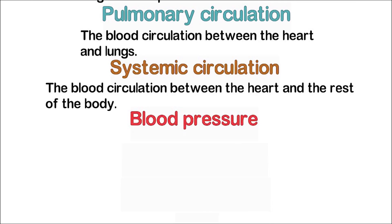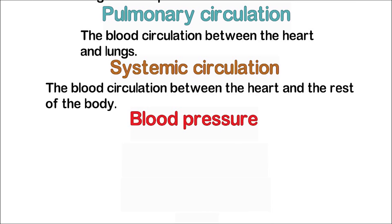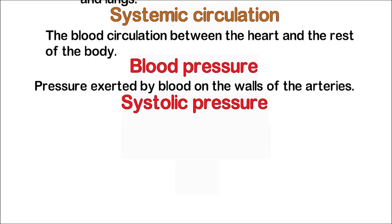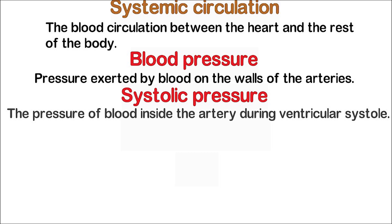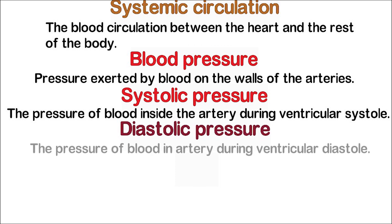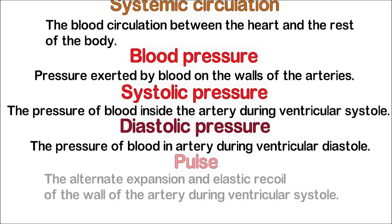Blood pressure is the pressure exerted by blood on the walls of the arteries, measured with a sphygmomanometer. Systolic pressure is the pressure of blood inside the artery during ventricular systole. Diastolic pressure is the pressure of blood in the artery during ventricular diastole. Pulse is the alternate expansion and elastic recoil of the wall of the artery during ventricular systole.